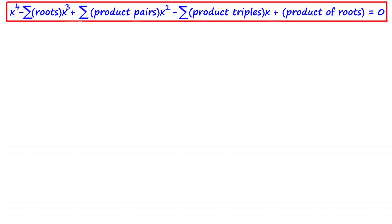Hi. In this video I want to follow up on what we were looking at in the previous video, which was about the roots of a quartic equation. I showed you that a quartic equation can be expressed in terms of its roots as x to the power 4 minus the sum of the roots times x cubed, plus the sum of the product pairs of roots times x squared, minus the sum of the product triples of roots times x, plus the product of roots, equals zero.